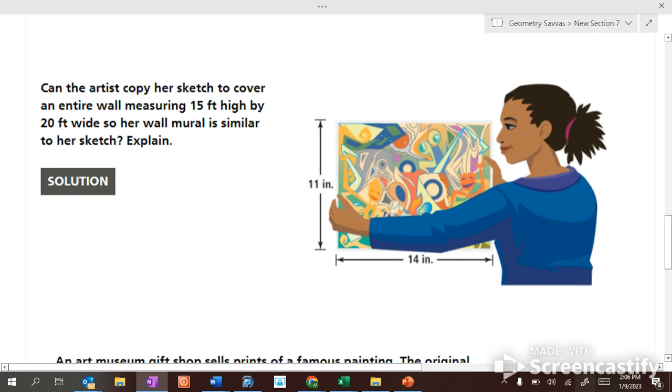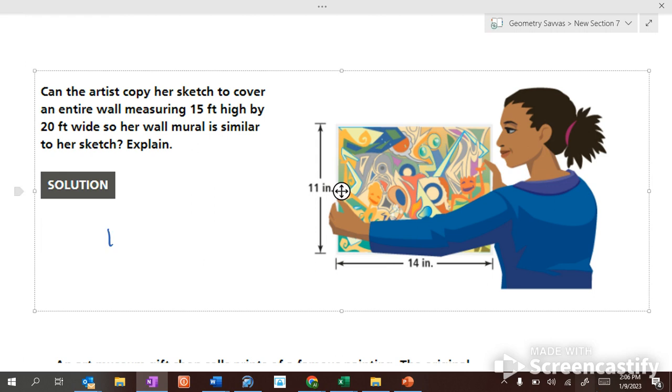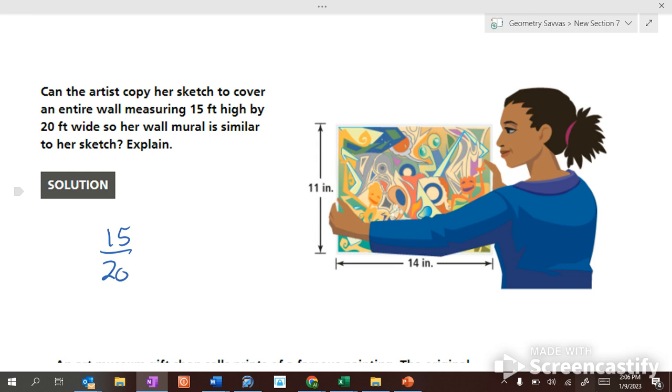All right. This artist is copying her sketch to cover an entire wall. So this is her sketch, and she's going to make a mural on a wall that's 15 feet high by 20 feet wide. Is her wall mural similar to her sketch? To be similar, the angles have to be congruent and the sides have to be proportional. That was the first question on your quiz today. So is 15 over 20 (high, wide) equal to 11 over 14? Are they equal? Don't think so.